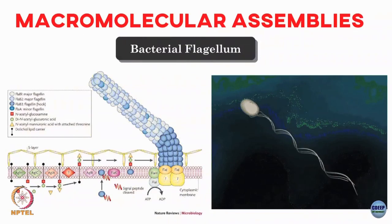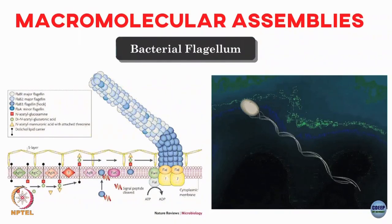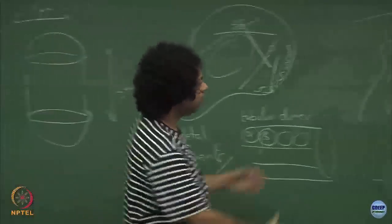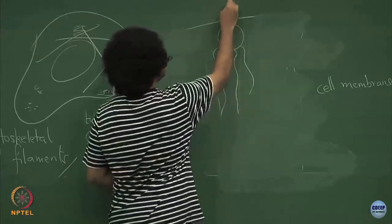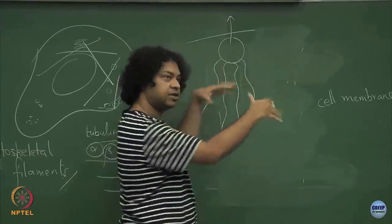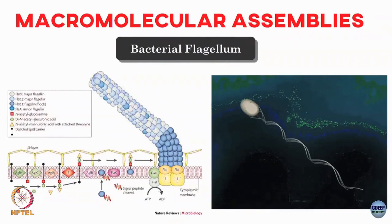Another example of a macromolecular assembly is the bacterial flagellum, made up of many different proteins. E. coli has many flagella. When E. coli wants to move in a particular direction, all the flagella come together and rotate in a coordinated corkscrew fashion, propelling the cell through the medium. When it does not want to move directionally, the flagella spread apart and the E. coli just drifts around. These are the two phases of E. coli motion: run and tumble.